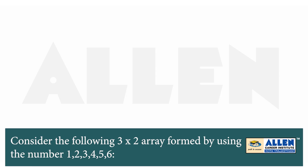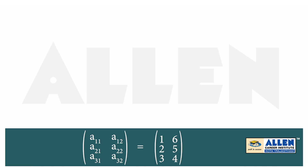Consider the following 3×2 array formed by using numbers 1, 2, 3, 4, 5, 6. Row 1 is A11, A12. Row 2 is A21, A22. Row 3 is A31, A32. On the right-hand side it is 1, 6, 2, 5, 3, 4.